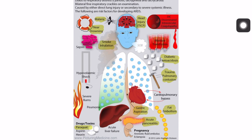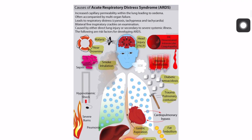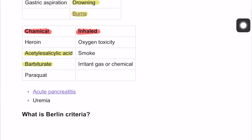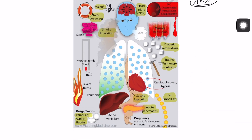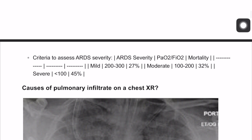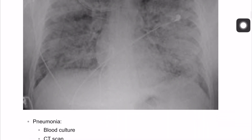The Berlin criteria are used to identify the severity of ARDS based on the PaO2/FiO2 ratio and give a mortality risk estimate. Mild ARDS: PaO2/FiO2 of 200–300. Moderate: 100–200. Severe: less than 100.